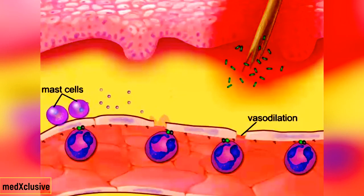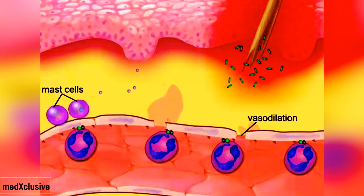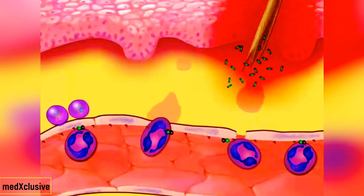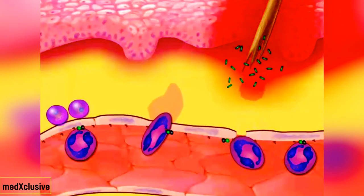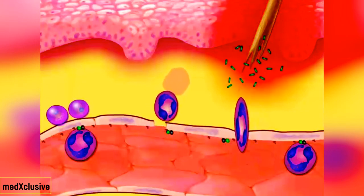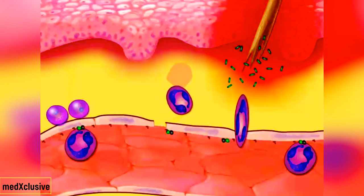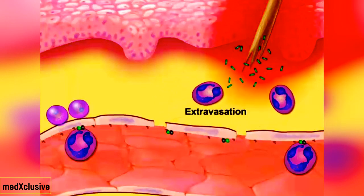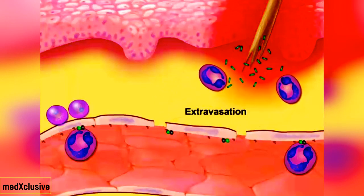This allows fluid and leukocytes to leave the capillary and enter the infected tissue. The neutrophils now undergo dramatic changes in shape and squeeze through the endothelial wall into the interstitial tissue fluid. This process is called extravasation.